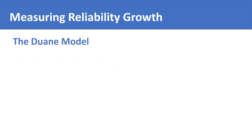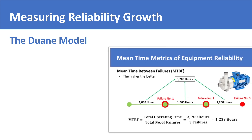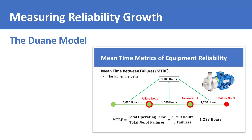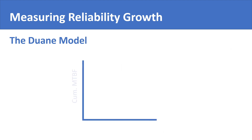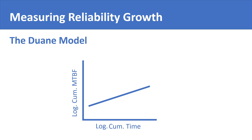Let us first talk about the Duane model. We have already discussed how mean time between failures is one of the main metrics that represents reliability. A high mean time between failures represents high reliability, and a low mean time between failures represents low reliability. The Duane model plots cumulative mean time between failures over cumulative operation time. The founder of the model found that when logarithmic values of both metrics are used, what you get is a straight line plot.